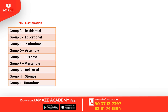NBC building classifications are: Group A — Residential, Group B — Educational, Group C — Institutional, Group D — Assembly, Group E — Business, Group F — Mercantile, Group G — Industrial, Group H — Storage, Group J — Hazardous.